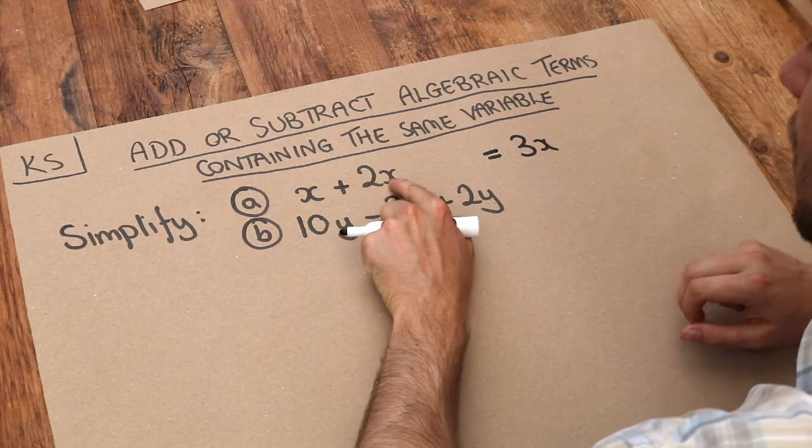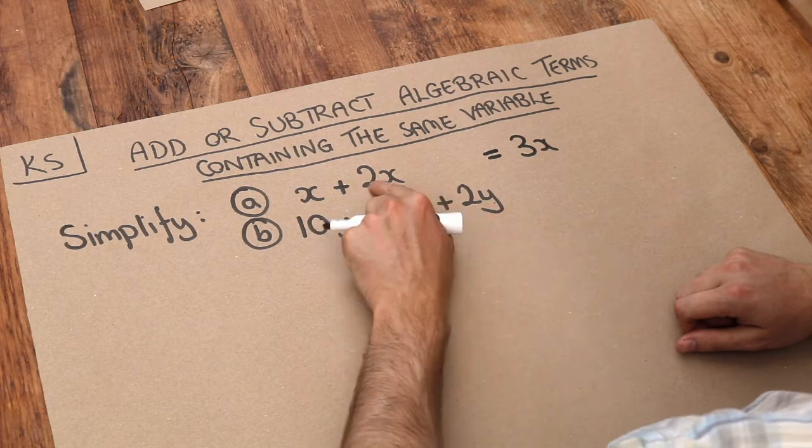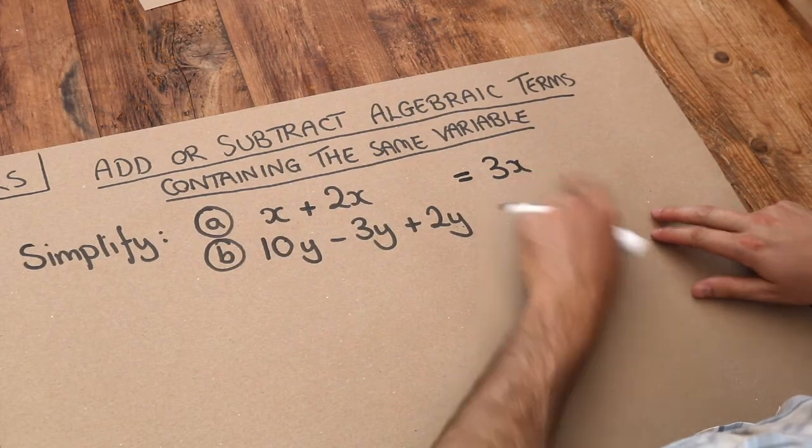So in algebra when you have two things next to each other that just means they're being multiplied together. So 2x means two lots of x, just like 3x means three lots of x.